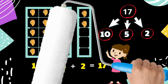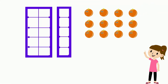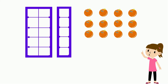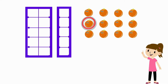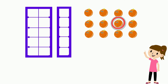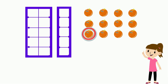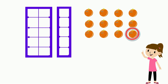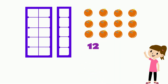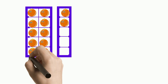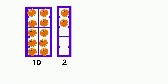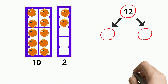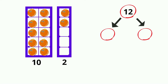Now let's try another example and see if you can decompose this number. We have some oranges. Let's count them together: one, two, three, four, five, six, seven, eight, nine, ten, eleven, twelve oranges in total. Let's use this table to arrange these oranges. We have ten oranges here and two here. We have decomposed the number twelve, breaking it down to ten and two. That was great, kids!